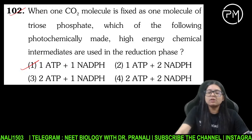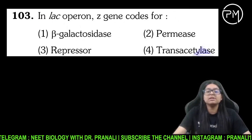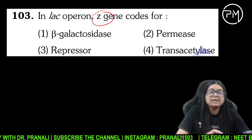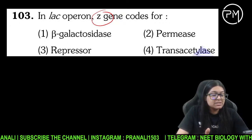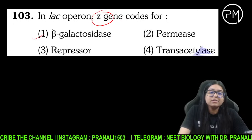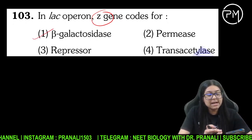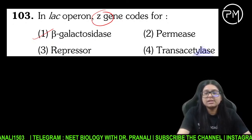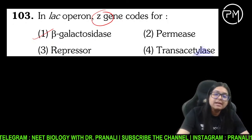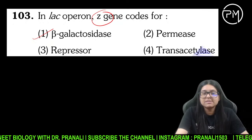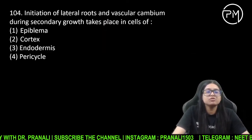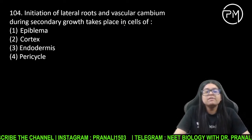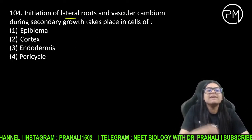Lac operon mein Z gene kiske liye code karta hai? Toh ye code karta hai beta-galactosidase ke liye. It codes for beta-galactosidase. Y ka bhi yaad rakh lena — permease; A ka bhi — transacetylase. Z ka yaad raha? Next question pe aate hain.